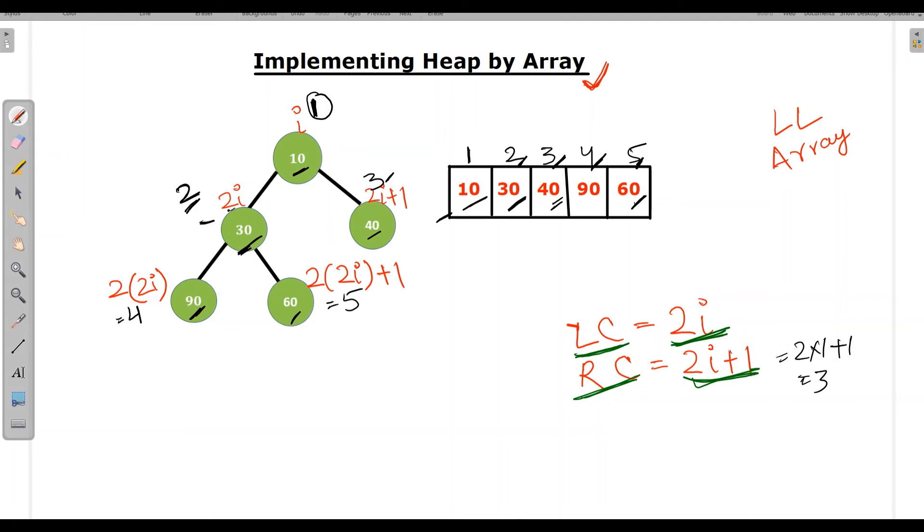Now what if, if I have been given child index, 3. So how I can calculate the parent, divided by 2. 3 divided by 2 is 1. Now what if, if I have 5th index, 5. So it will be divided by 2. And it always takes lower bound, 2. So 5th index parent is 2nd index. So this is how we can calculate parent index and child index.